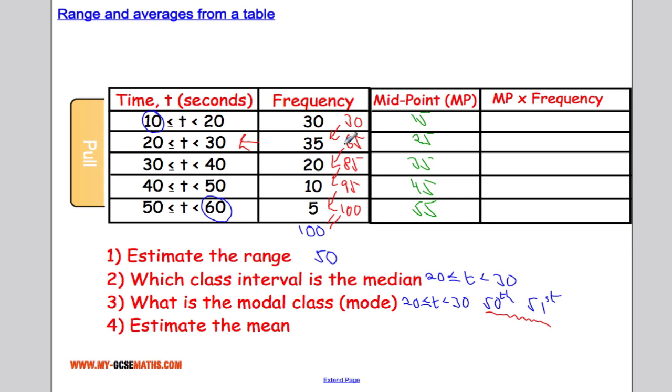Next, we're going to do the midpoint times by the frequency. So 30 times 15, let me get the calculator going. 30 times by 15 gives us 450. 25 times by 35 gives us 875. 35 times by 20 gives us 700. 45 times by 10 gives us 450. Let me just tidy that up. That should be 700. And 55 times by 5 gives us 275.